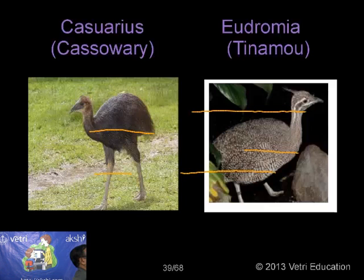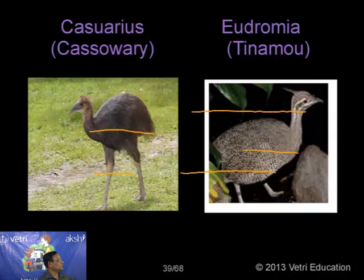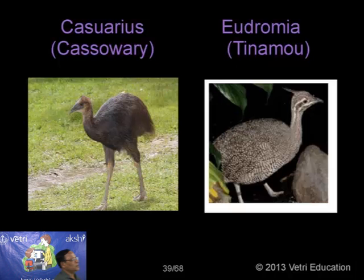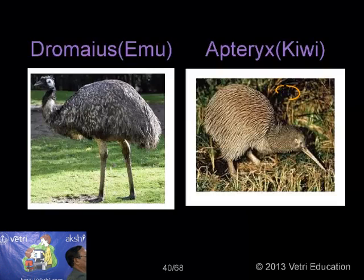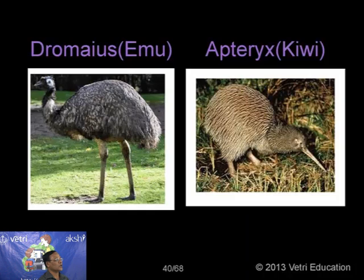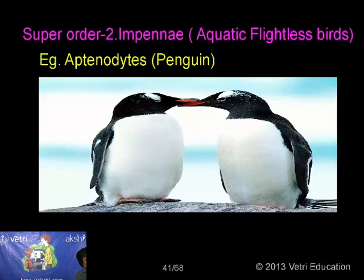Now let's see the pictures of each one. This is Casuarius — found in Australia, somewhat larger, not the fastest runner. Then Dromaeus, the Emu — see that one, having more flesh, moving very slowly, unlike the ostriches. And this is Kiwi of New Zealand — found only in New Zealand.